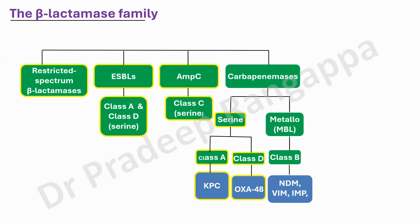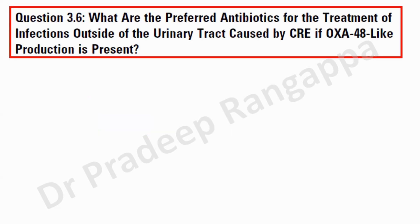The question is: what are the preferred antibiotics for infections outside of UTI caused by CRE if it is an OXA-48 producer? Studies from India — from BHU, Vellore, and a few other centers — have shown that NDM and OXA-48 are very highly prevalent in our epidemiological data. OXA-48 prevalence is pretty high, comparable to NDM, making it the most prevailing resistance pattern in CRE in India.